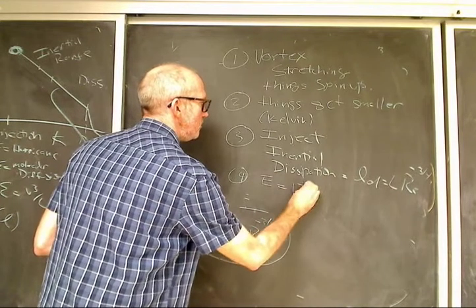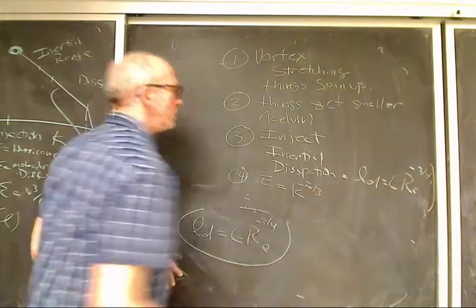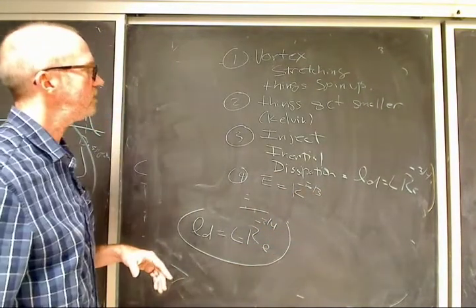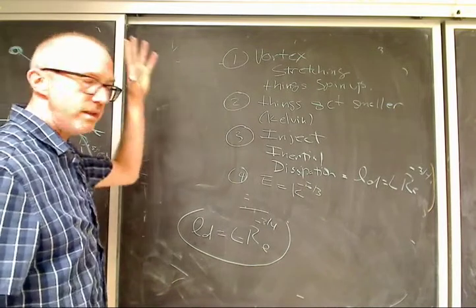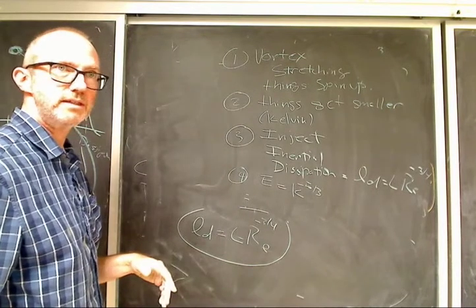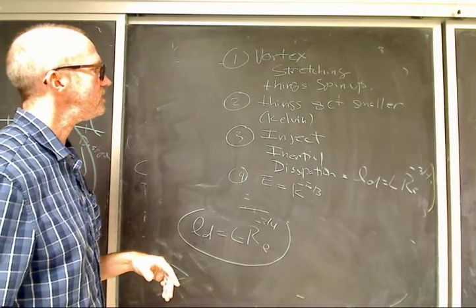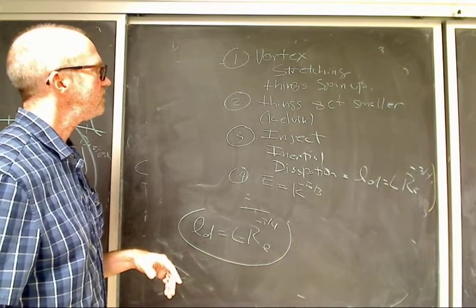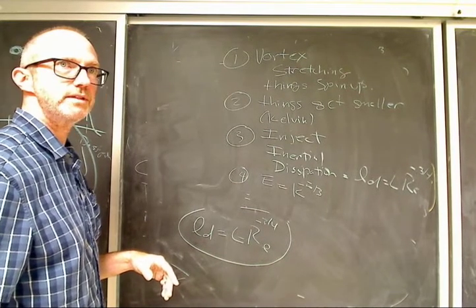We're left with the energy cascade: E goes like K to the minus five thirds. I'll talk about all this in more detail, but this is the overview of what we went over.